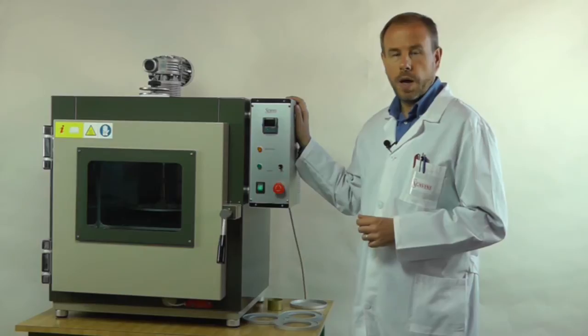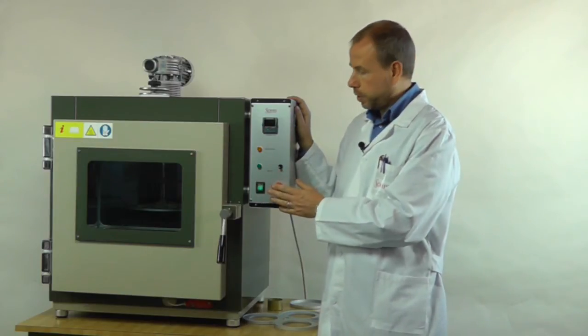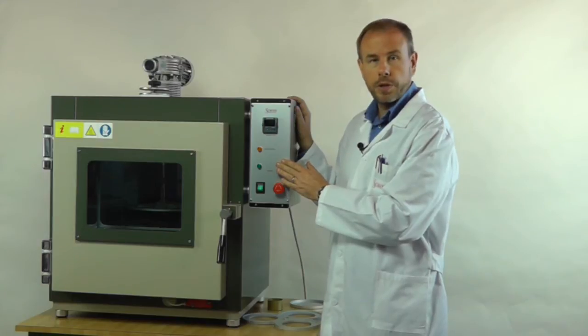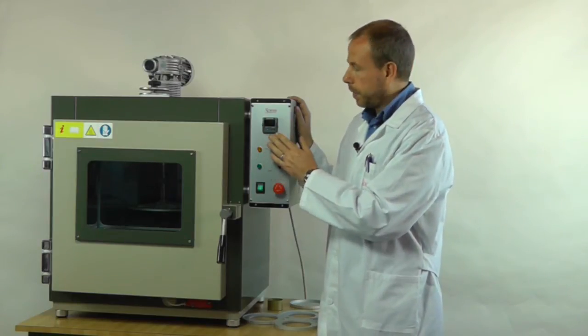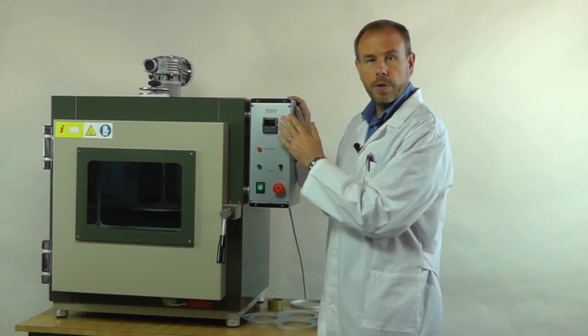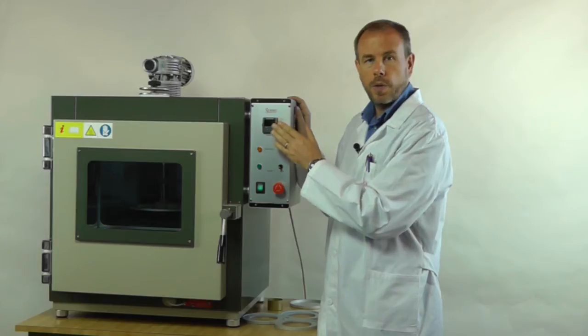On this side we have the control box with the main switch, the emergency switch, a dedicated switch for the shelf rotation, the alarm lamp and the thermoregulator with double display, one for the current temperature and the other one for the set point.